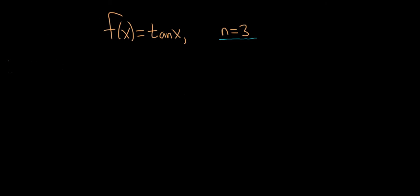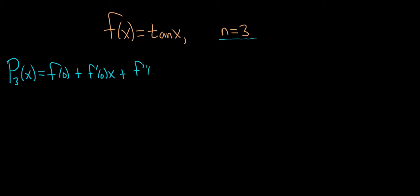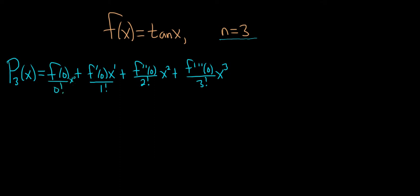So let me write down the formula. P sub 3 of x is equal to f(0) plus f'(0) times x, plus f''(0) over 2 factorial times x squared, and the last term — because it's a 3 — would be the third derivative evaluated at 0 over 3 factorial times x cubed. This is the third degree Maclaurin polynomial. It's easy to memorize if you notice the pattern goes 0, 1, 2, 3 and we stop at 3 because n is 3.